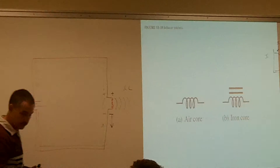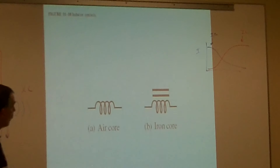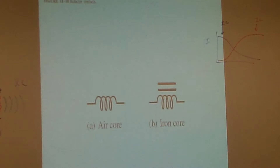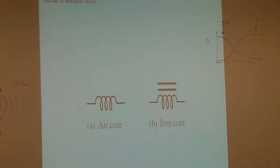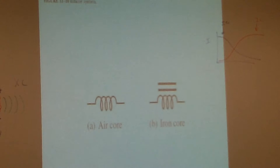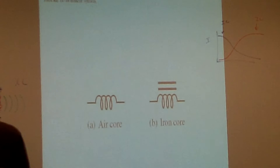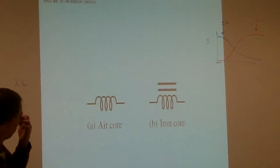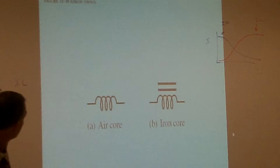You can have different types of cores: air core, iron core, or a laminated core. A laminated core inductor is one I'll pass around. An air core would be just if I took a piece of wire, wrapped it around my pencil, and then removed my pencil - that would be the air core one. We might build our own air core inductor. Laminated cores are usually used for a lot more heavy-duty things.